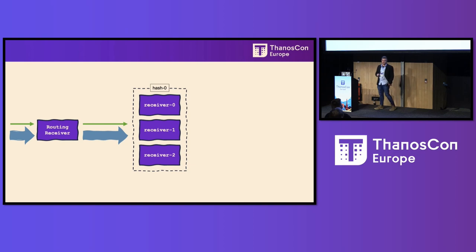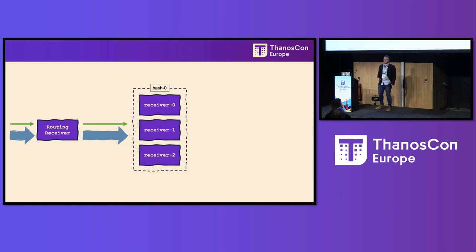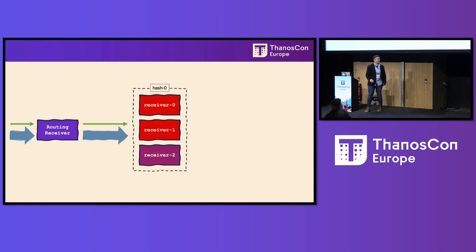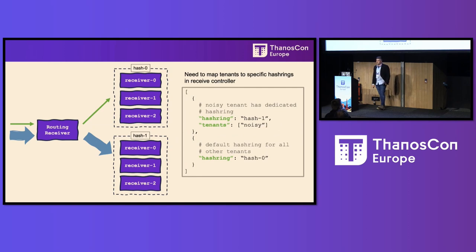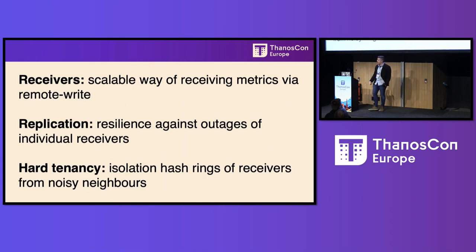We also implement a multi-tenancy model at Open Systems. In the past we've had problems with service teams pushing metrics with label explosions — like labeling request IP, domain, and user — causing cardinality explosions that can cause a failure cascade in our receives, where one tenant can take out many. Hard tenancy aims to solve this, giving us separate pipelines for our hard tenants with isolated hash rings.